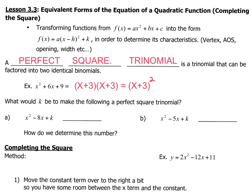Lesson 3.3, equivalent forms of the equation of a quadratic function. Completing the square basically transforms functions from the form f of x equals ax squared plus bx plus c into the form f of x equals a bracket x minus h close bracket squared plus k in order to determine its characteristics.